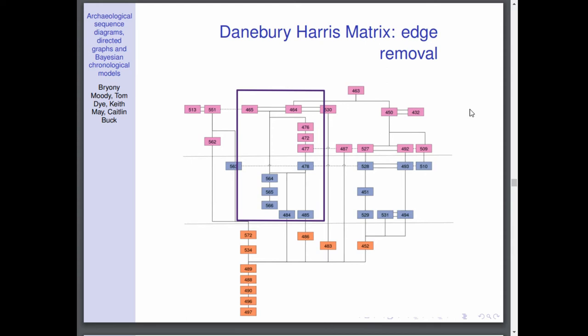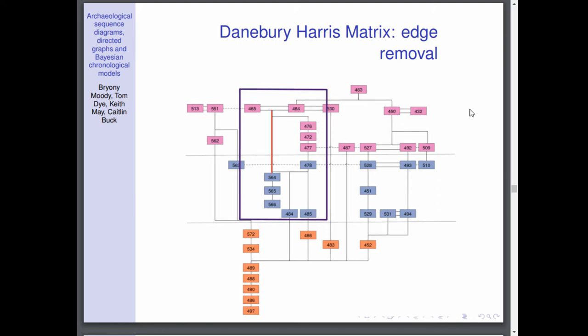And because 476 is itself above 564, the HM software decides that it doesn't need this edge. The edge in red, it says this isn't useful for me. I'm only wanting the chronological information. So it's edges like that that are deleted at this step in the process.